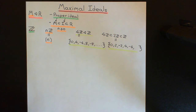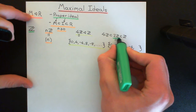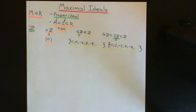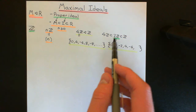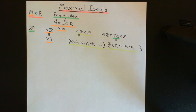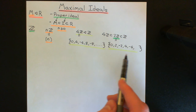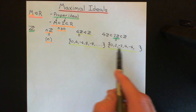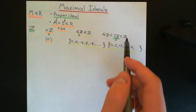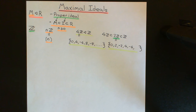2ℤ, on the other hand, would be a maximal ideal within the ring of integers. There is no bigger ideal within the ring of integers that properly contains 2ℤ and which is a proper ideal of the integers. The only ideal that is bigger than 2ℤ is the unit ideal, and that's not a proper ideal — that's equal to the entire integers. So if you even try to put another element into 2ℤ, in order to maintain it as an ideal, you end up having to make it into the entire integers — the entire unit ideal. Therefore 2ℤ counts as a maximal ideal.